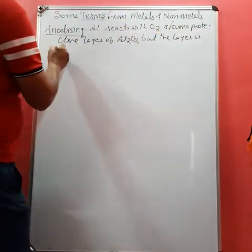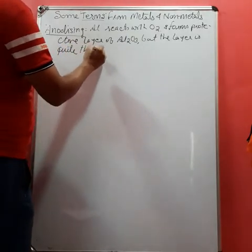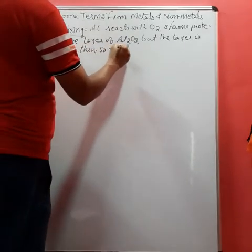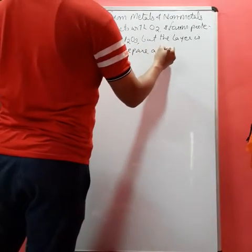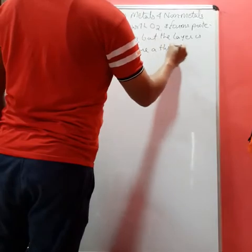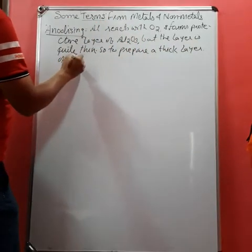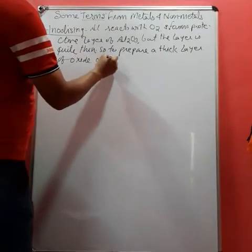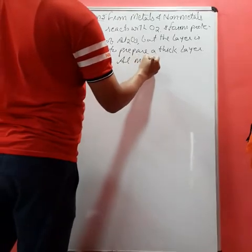So to prepare a thick layer of oxide over the aluminum metal, anodizing process is applied.